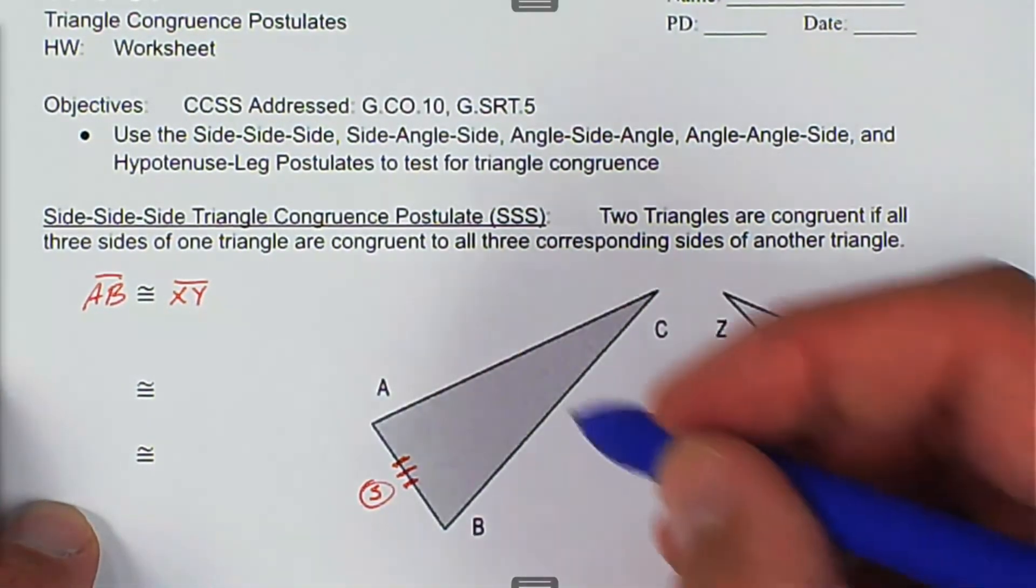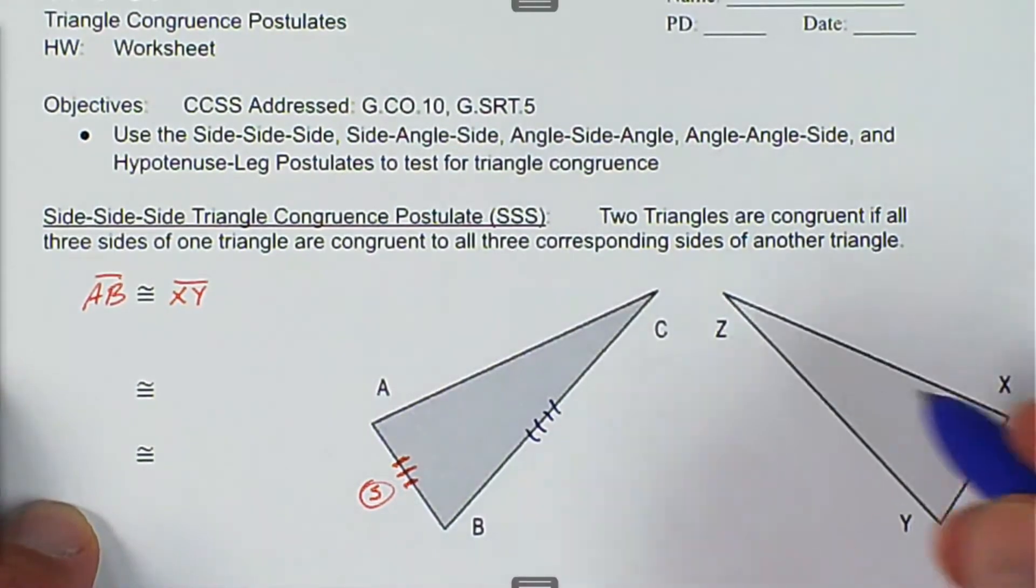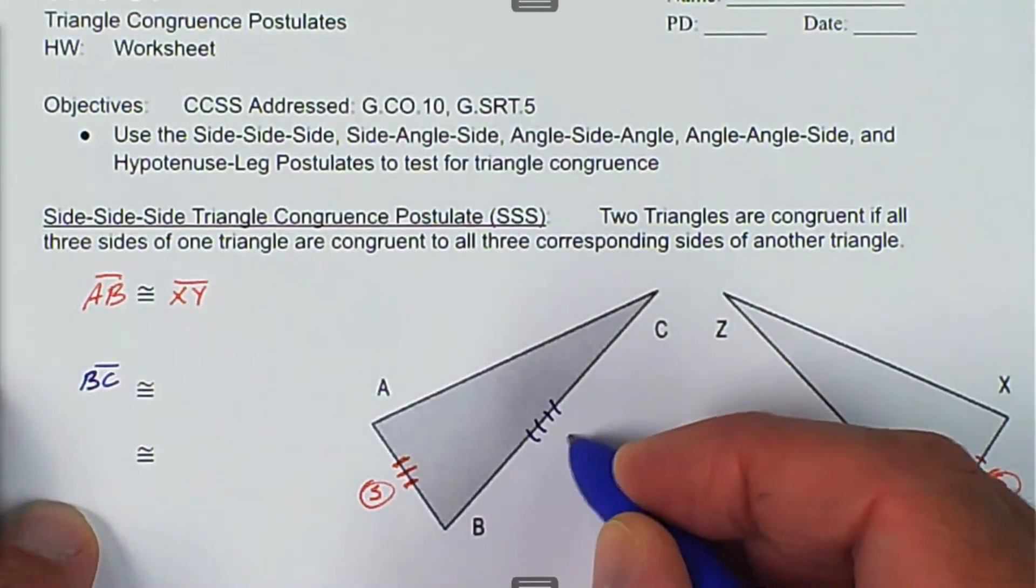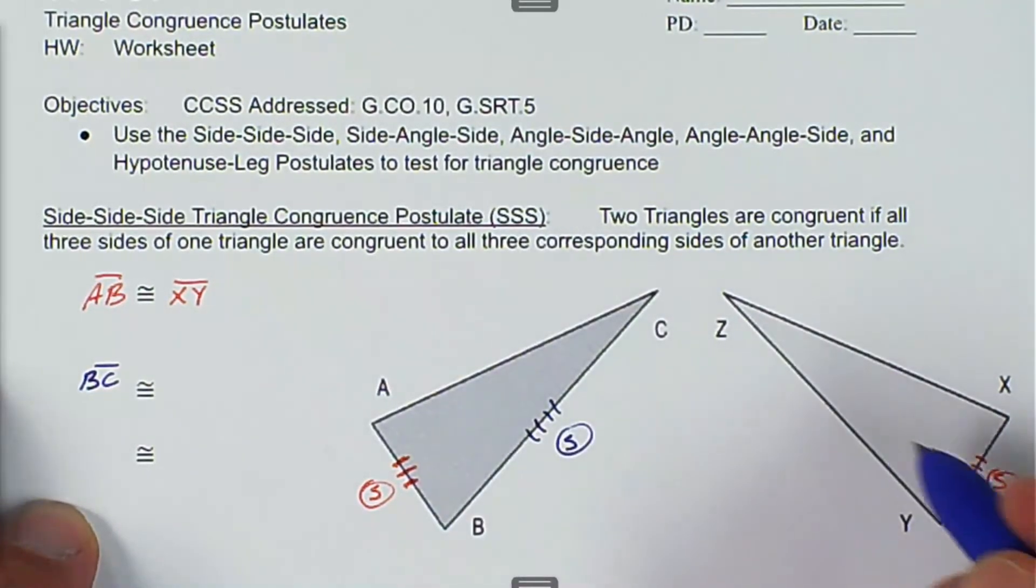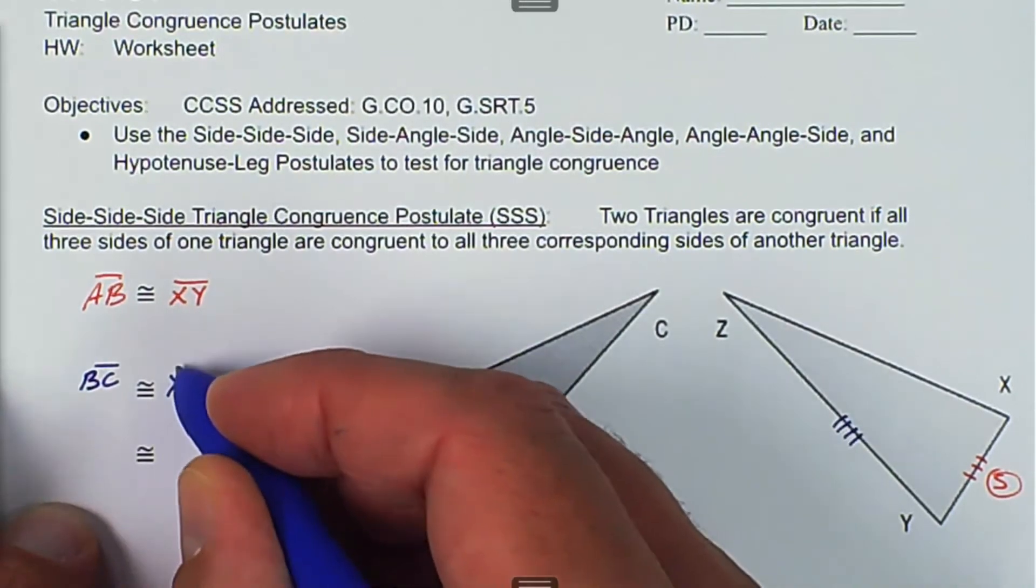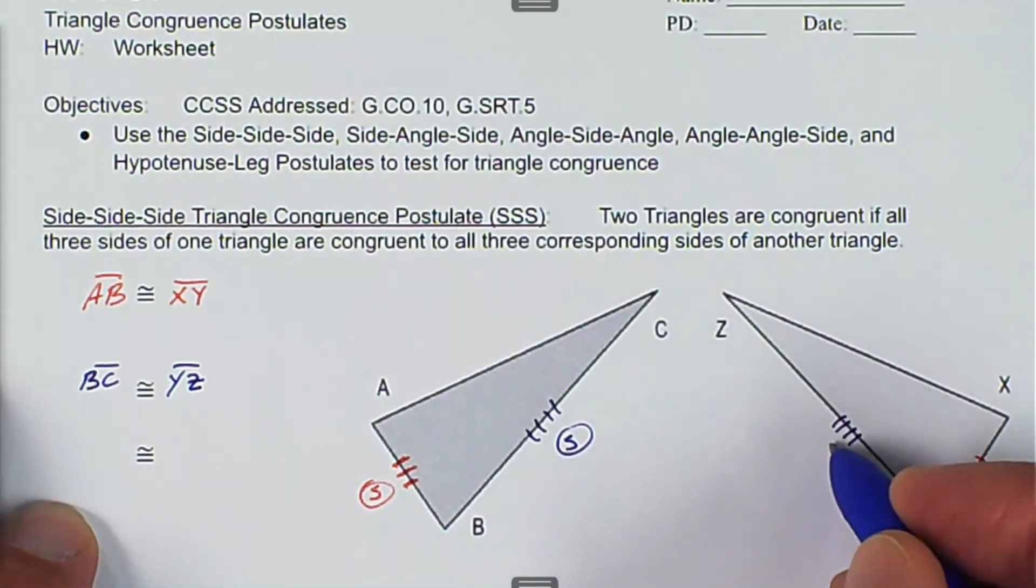Then we have BC, and that's another side. That's going to be congruent to YZ. That's another side.